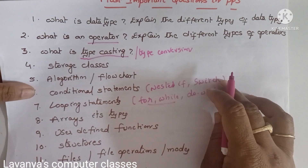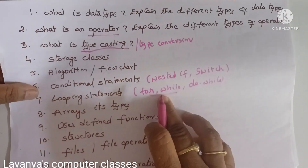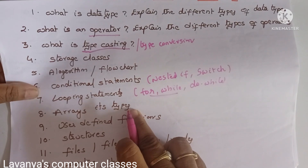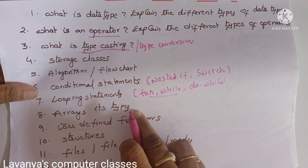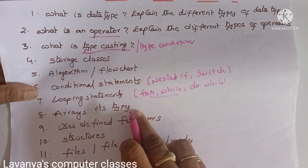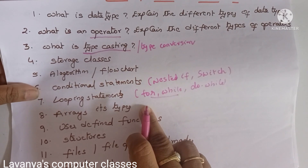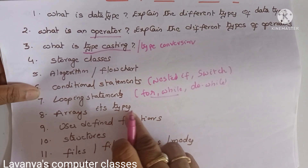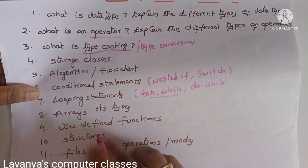Important programs include factorial of a given number, GCD, and Fibonacci series. Next is arrays: learn the different types — single dimensional and double dimensional arrays with example programs. Key example programs are matrix multiplication, transpose of a matrix, and finding the minimum and maximum element in a given array. These are very very important.